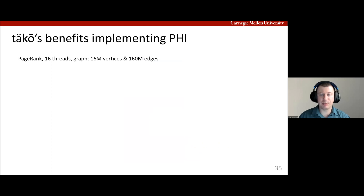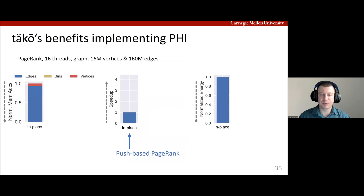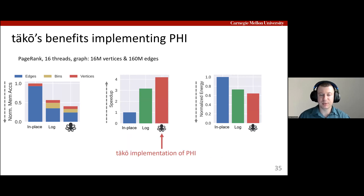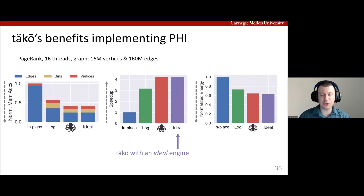The TACO version of PHY replicates the conclusions from the original PHY paper. The first graph shows normalized memory accesses, the second shows speedup, and the last shows energy. The software baseline always applies updates in place. Alternatively, a software implementation that always logs updates reduces memory accesses and gets some speedup. Then TACO decides dynamically whether to apply updates in place or log them, reducing memory accesses further to achieve even better speedup. TACO is close to ideal because, as with the decompression example, compute is not the bottleneck.